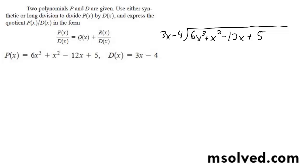We're going to do long division here — this whole quantity divided by 3x minus 4. First off, 6x cubed divided by 3x gives us 2x squared, so it goes in there 2x squared times. Multiply this through: I get 6x cubed, and then times negative 4 is minus 8x squared.